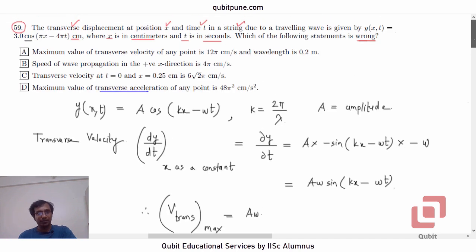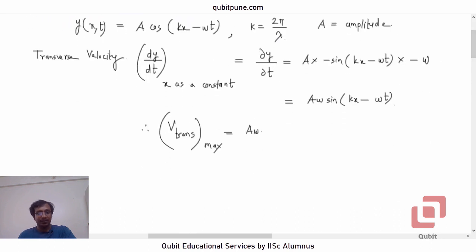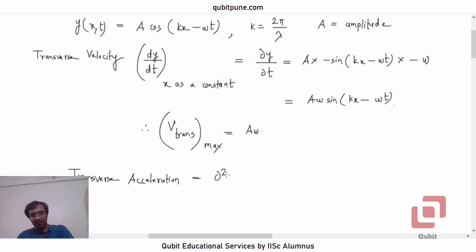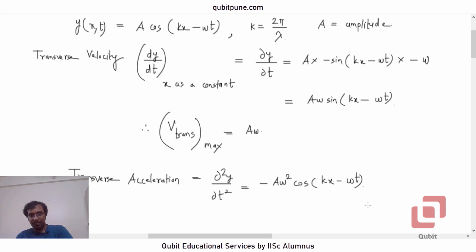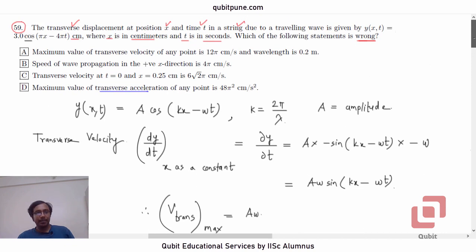They also ask about the maximum value of transverse acceleration. Transverse acceleration is the second partial derivative ∂²y/∂t². Taking the derivative of Aω sin(kx − ωt) again with respect to t: the derivative of sin gives cos, and the chain rule brings down another −ω, giving −Aω² cos(kx − ωt). So the maximum transverse acceleration magnitude is Aω².